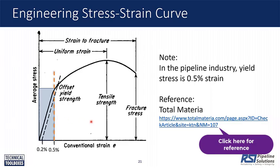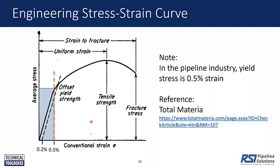The initial part of the curve is a line known as the linear elastic part. Then at some point the specimen is going to yield, and beyond yielding we get plasticity and nonlinear response. There are different ways to define the yield point. Pipeline people define yield point based on 0.5% strain — wherever the vertical line at 0.5% strain crosses the stress-strain curve, that defines the yield strength, sometimes written as SY.